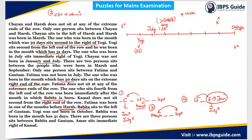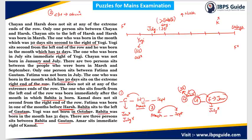Next: Bhavita sits to the left of Gautam. We already know Gautam and Fatima have one person between them, and Bhavita is somewhere to the left of Gautam. Yogi was not born in October. Bhavita was born in a month having 31 days. There are three persons sitting between Bhavita and Gautam, meaning they occupy positions that are four apart. We can now test possibilities for Bhavita's position in the original diagram.